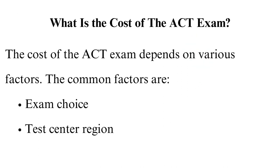What is the cost of the ACT exam? The cost of the ACT exam depends on various factors, including exam choice and test center region. The cost of the ACT test in the U.S., including the writing test, is $91, while the cost without the writing test is $66. The charges for international students depend on the location they reside — check the ACT website for more information. Note that there are other extra fees for additional services such as: 1. Switching a test center or date, 2. Late registration, 3. Extra score reports.